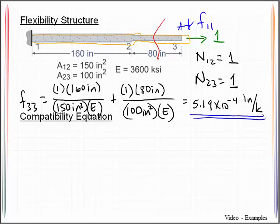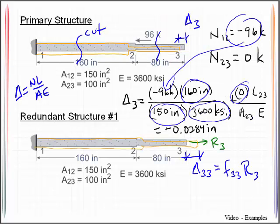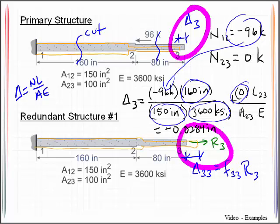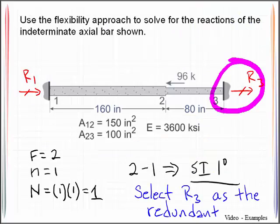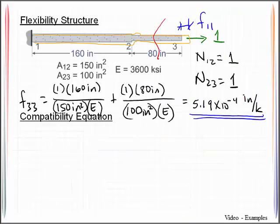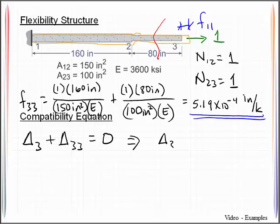I will take the deflections that occur at point 3, and I will add those up so that they equal what it is in the real structure here. So that would take the displacement 3 coming from the primary structure, plus the displacement 3-3 coming from the redundant structure, and all of that is equal to the displacement that is present in the real structure itself. And then this can be rewritten in terms of the flexibility coefficient, so it would look like this. Delta 3 plus F33 times R3 is equal to 0.